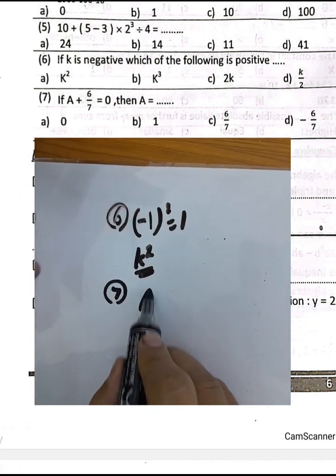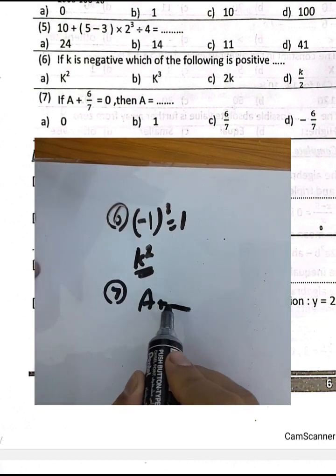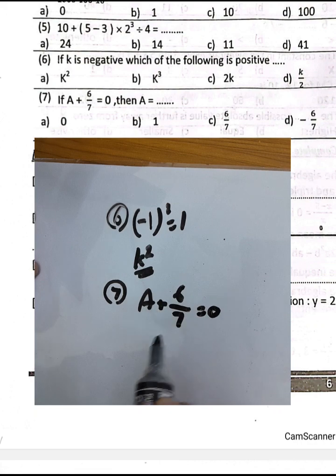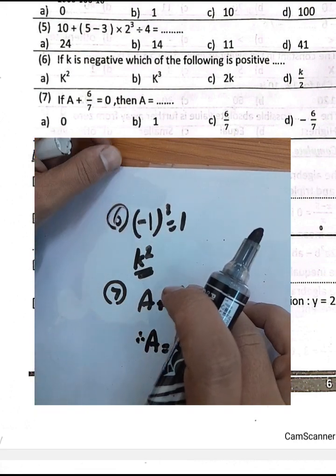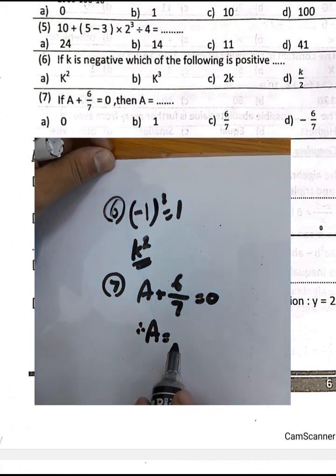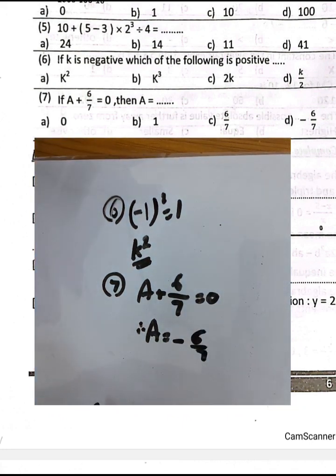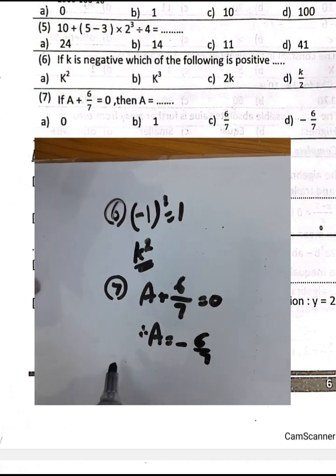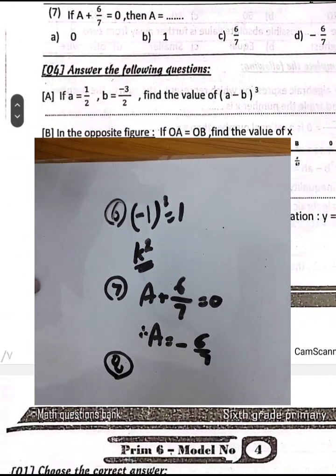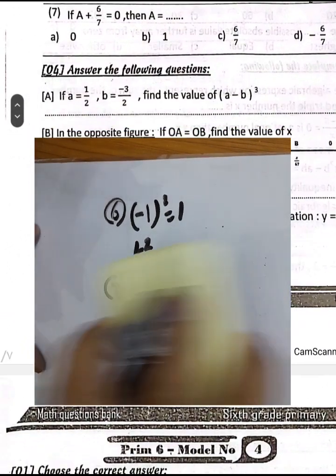Question number 7: If a plus 6 over 7 equals zero, then a equals the additive inverse of 6 over 7, which is negative 6 over 7.